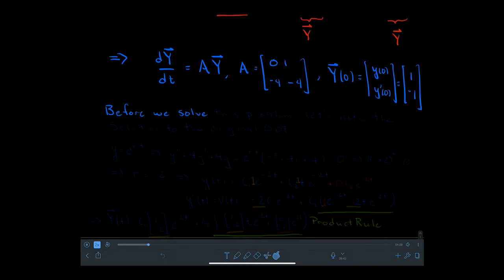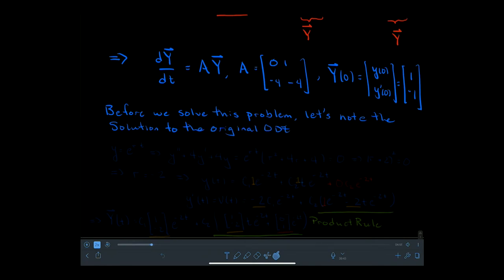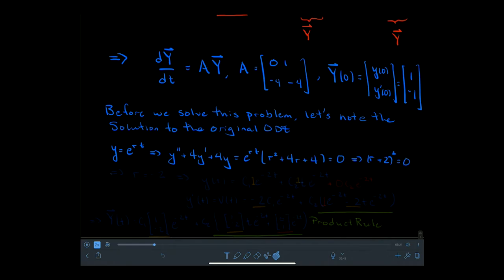Before we solve this problem, let's note the solution to the original ODE. If y = e^(rt), then the characteristic equation is r² + 4r + 4 = 0. Setting that equal to zero, I find (r + 2)² = 0, so r = -2, which is a repeated root. Therefore y(t) = c₁e^(-2t) + c₂te^(-2t).